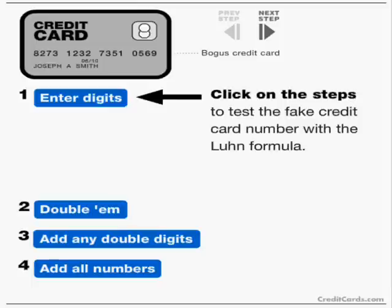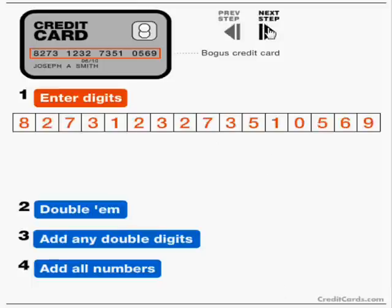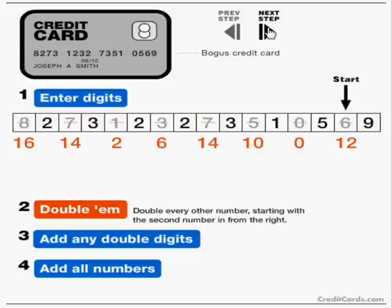It takes the 16-digit account number and starts by doubling every other digit, starting at the least digit. 6 becomes 12, 0 is still 0, 5 becomes 10, 7 becomes 14, 3 becomes 6, 1 becomes 2, 7 becomes 14, 8 becomes 16.